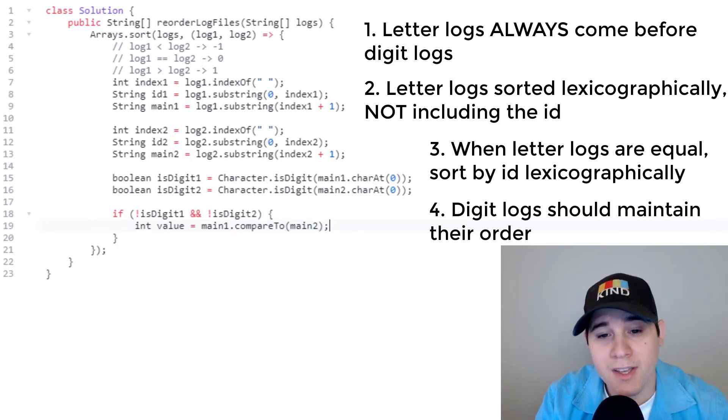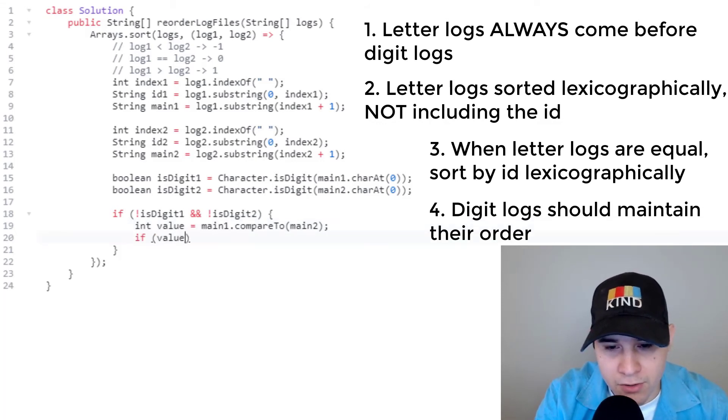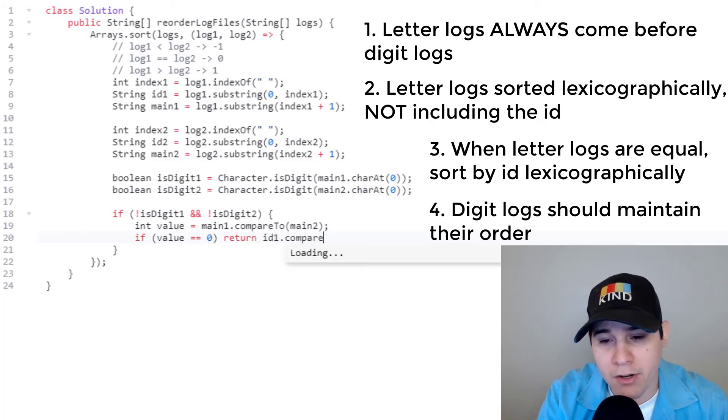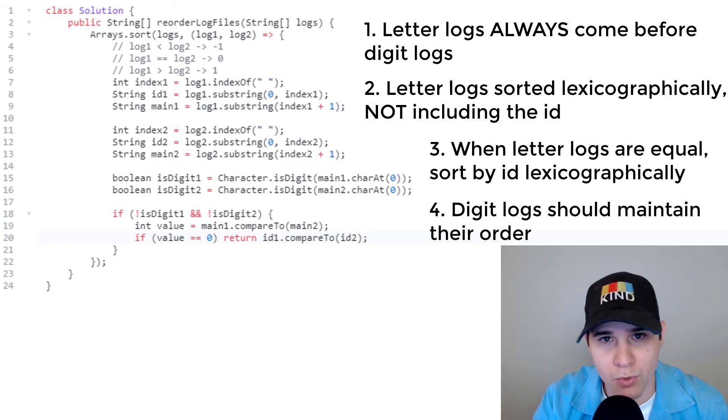However, keep in mind, if these main strings are the same, then that means we need to compare by identifier. So we have to have an extra check here. We'll say if our value, if it's equal to zero, that means they were equal. And that means we need to compare by the identifiers. So we'll say ID one compared to ID two. So this will handle this following rule.